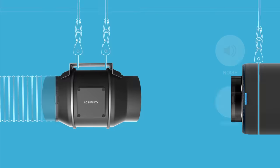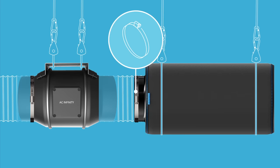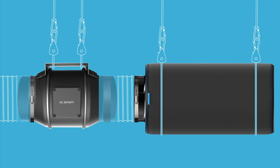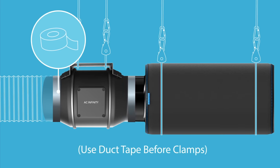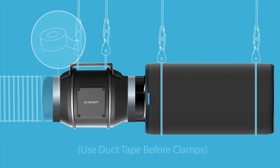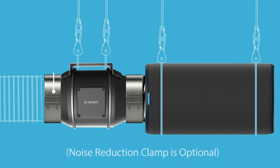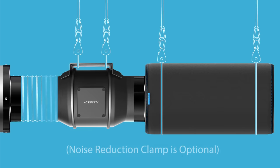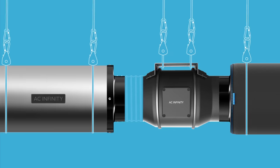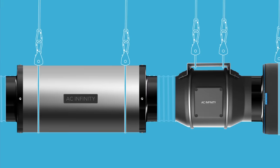Use ducting with clamps to connect the carbon filter to your fan. As an option, you may also add duct tape to prevent air leaks. You can also install a noise reduction clamp, or place a silencer between the ducting to further reduce noise output.